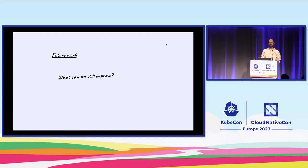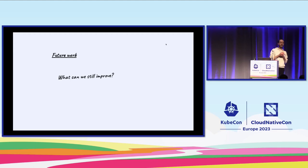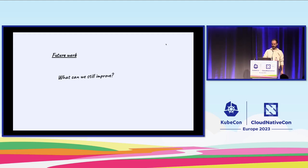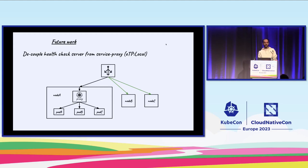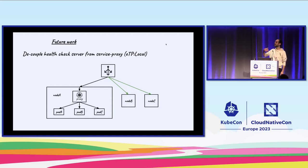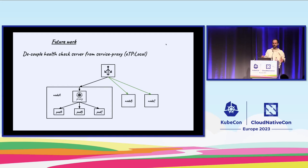Given all of this, there are still things we can improve on. What I'm presenting now is very much on the drawing board — there's no KEP for this yet; these are ideas that have spawned out of GitHub discussions. The first one is that we'd like to somehow decouple the health check server from the service proxy, mainly within the goal of external traffic policy local, because it has fewer options when it comes to traffic load balancing in general.